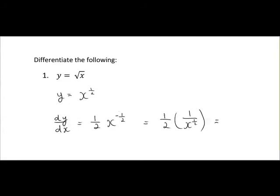So that gives us, top by top, 1 by 1 is 1 over 2 times x to the power of a half. But as we saw before, x to the power of a half is the same as square root of x. So it is 1 over 2 times root of x.